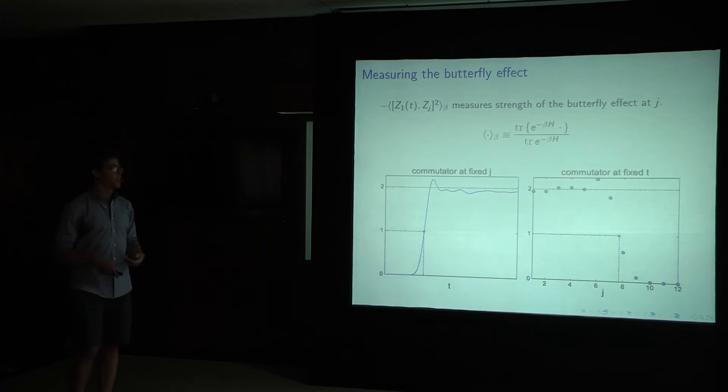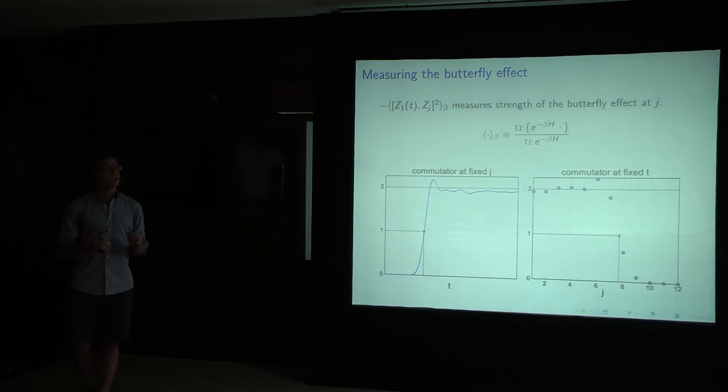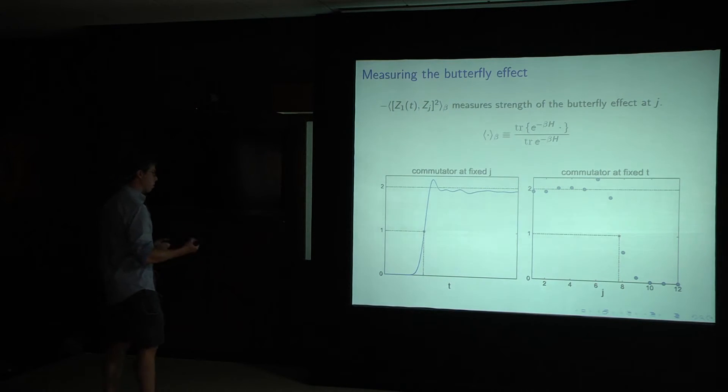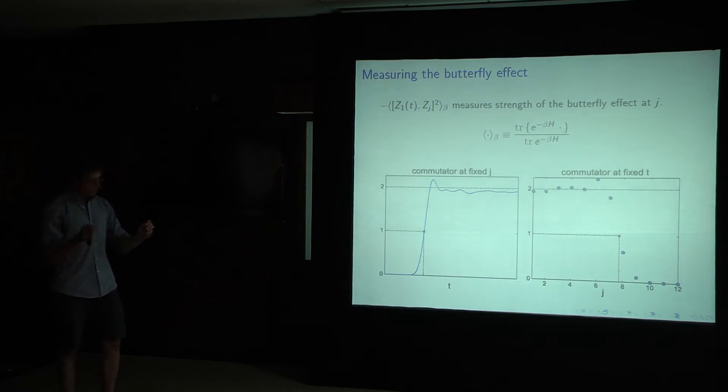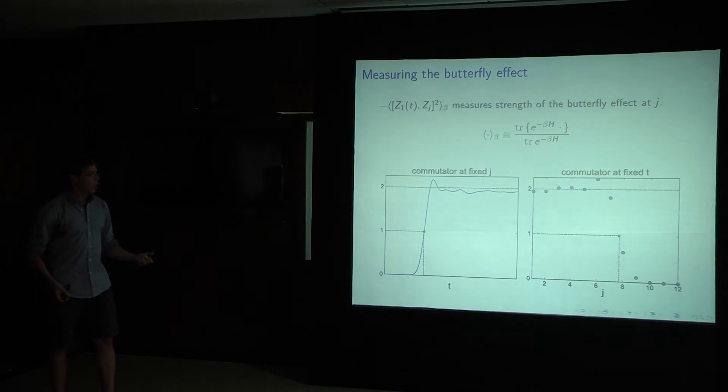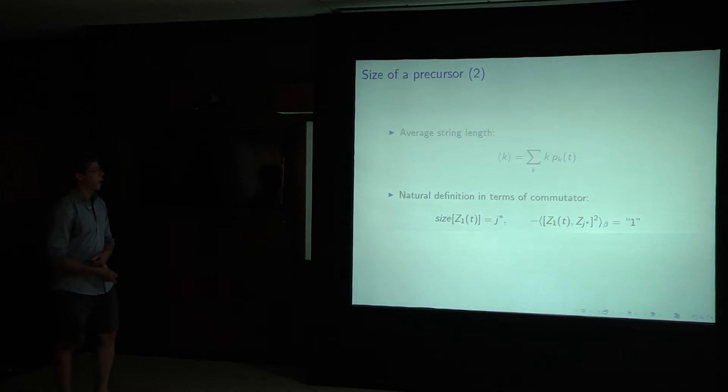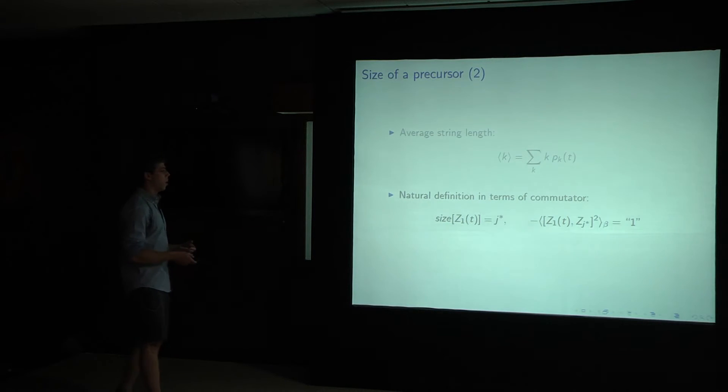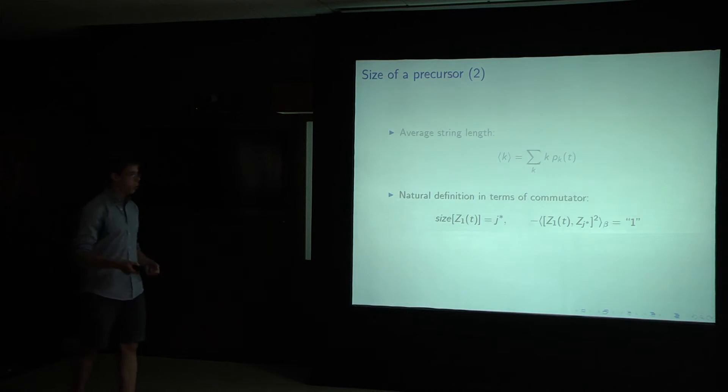Alternatively, we can study this as a function of fixed time and varied j. And this is exactly the sort of object that we were interested in. It's a measure of the size of z1 of t, of our precursor. Z1 of t at some large enough fixed t is some operator that has some radius or size. And what we do is we vary j around. We take the simple local operator, and we measure it at different points, and we find the place where it begins to start commuting. In this case, it's around 8, and that's the size of our operator. And so I sort of spoiled my next slide. This gives us a really natural definition of size in terms of this commutator. We find the point where it begins to transition where it's equal to 1, and that j star, such that it's equal to 1, is the size.